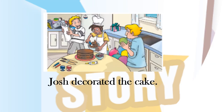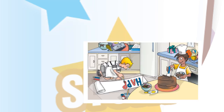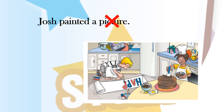Josh decorated the cake — what is wrong? Josh is wrong. The correct answer is Ravi. Ravi decorated the cake. Josh painted a picture — what is wrong in this sentence? Picture is wrong, and the correct word would be message. Josh painted a message.